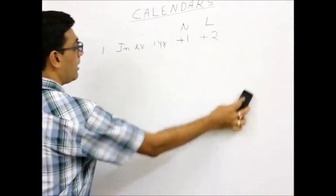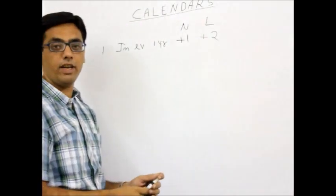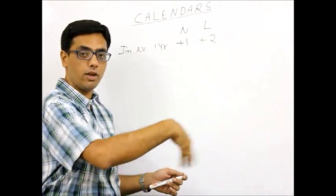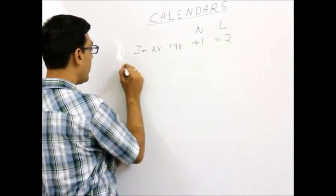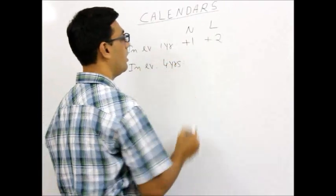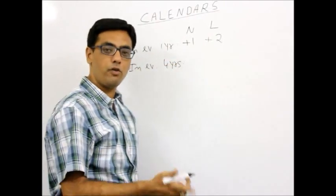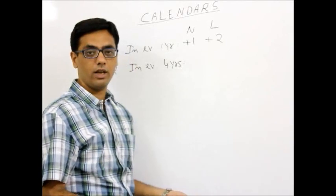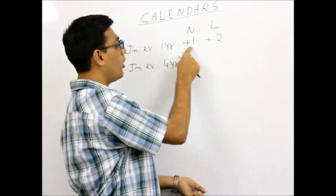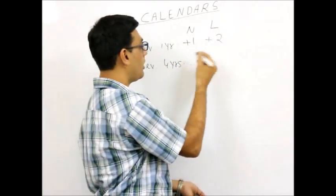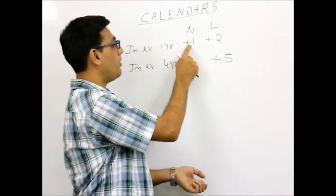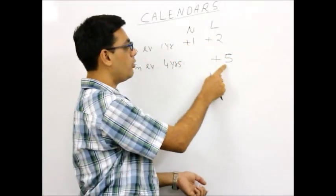So to summarize Rule 1: in every 1 year it is plus 1 or plus 2. If a leap year is coming and 29th February is in our path, it is plus 2. Now Rule 2: what happens in every 4 years? Since in every 4 years 1 leap year definitely comes, there are 3 normal years and 1 leap year. So 1 plus 1 plus 1 from normal years is 3, and the leap year contributes plus 2, so the rule should be plus 5.